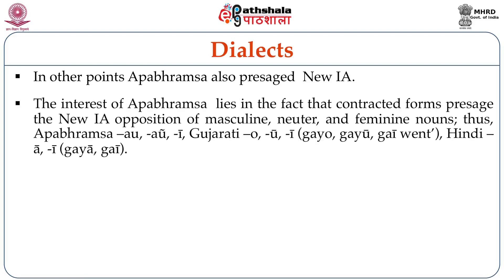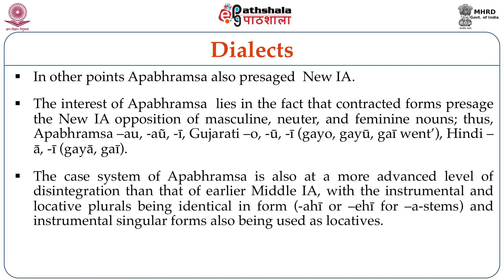Thus Apabhramsha forms AU, AU with nasal, E correspond to Gujarati O, U, E — for instance gayo, gayu, gayi (went); while Hindi has only two forms A and E — gaya and gayi. The case system of Apabhramsha is also at a more advanced level of disintegration than that of earlier Middle Indo-Aryan, with the instrumental and locative plurals being identical in form — for instance ahi or ahi for A stems — and instrumental singular forms also being used as locatives.